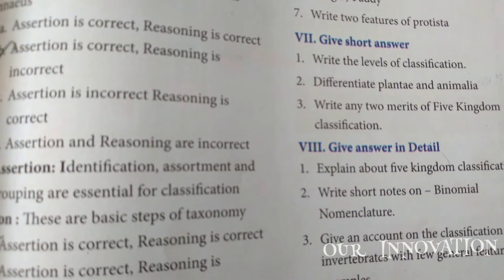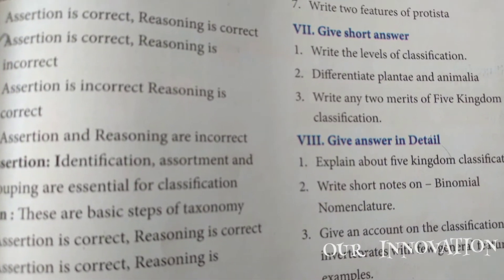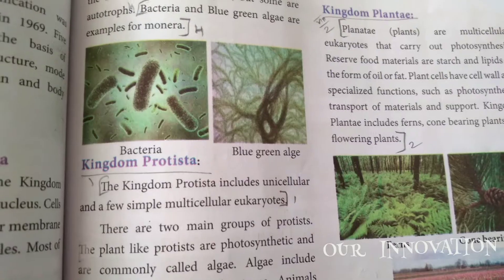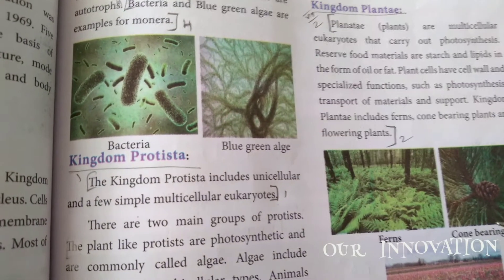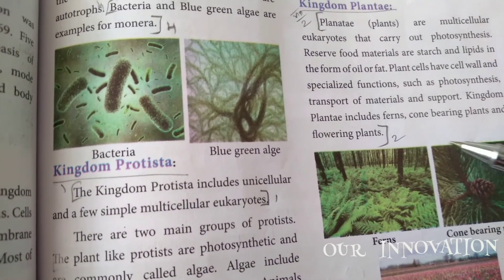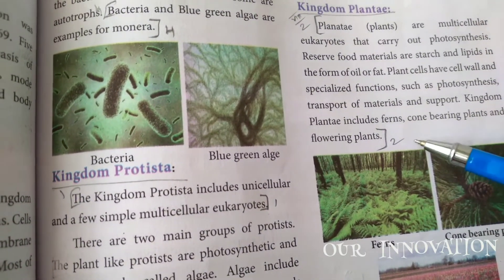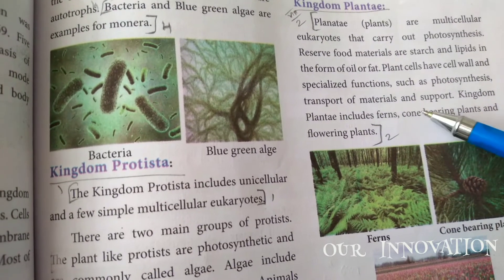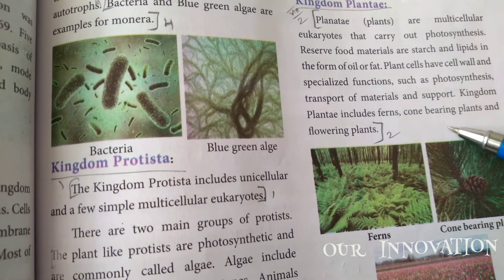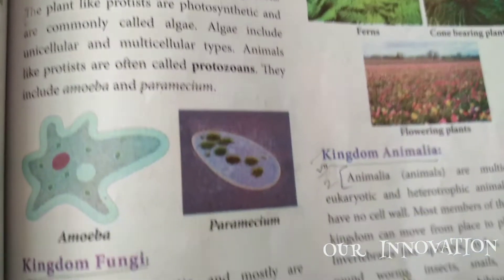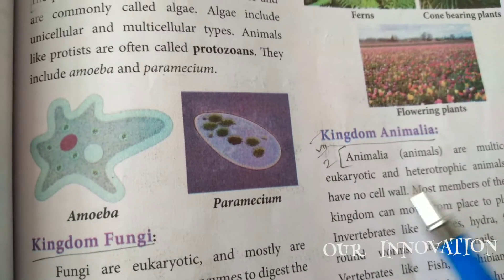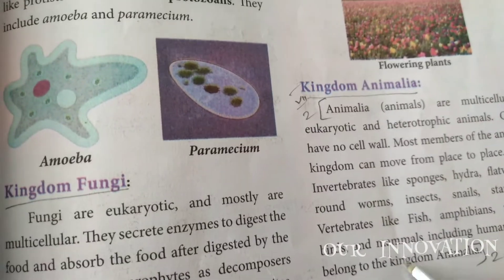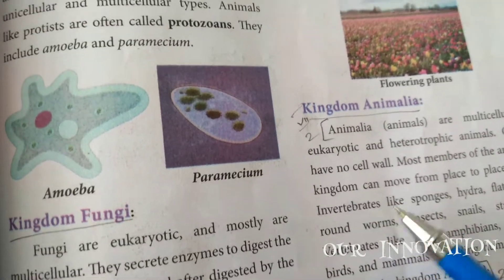Second short answer: differentiate Plantae and Animalia. Page number 81. They have given a heading on Kingdom Plantae - write the full paragraph for Plantae. Then write the full paragraph for Kingdom Animalia. These two paragraphs together form the answer differentiating both kingdoms.